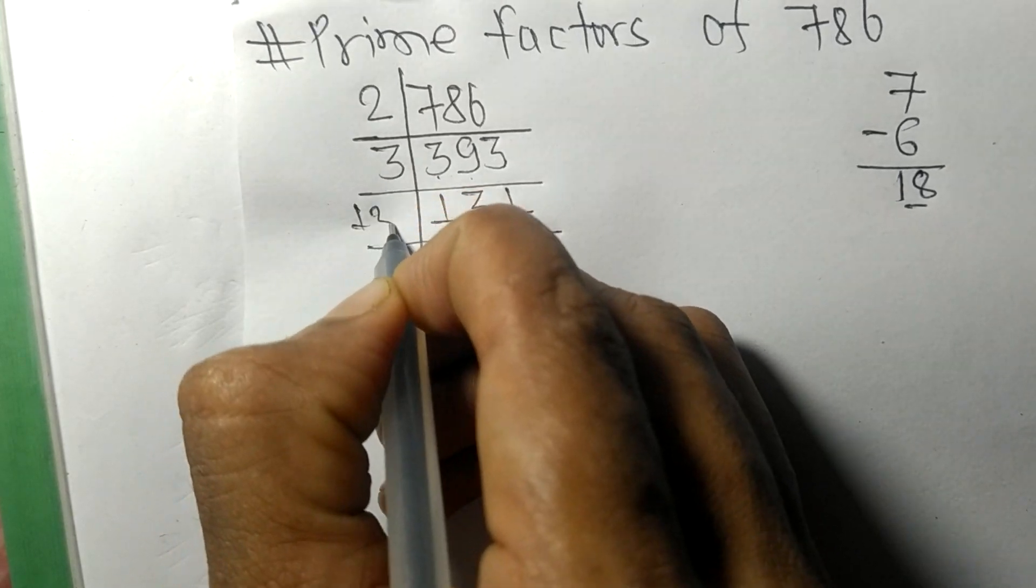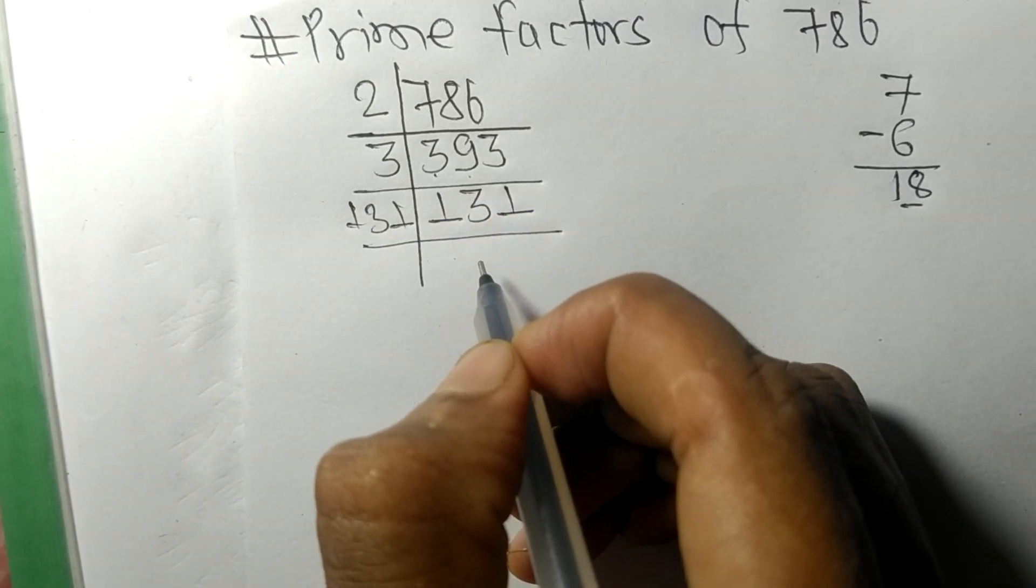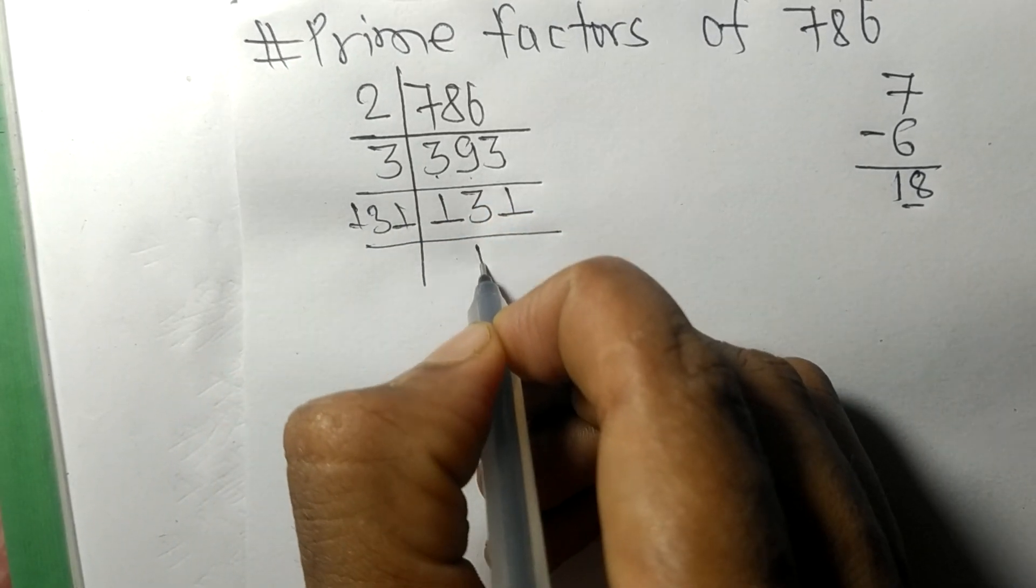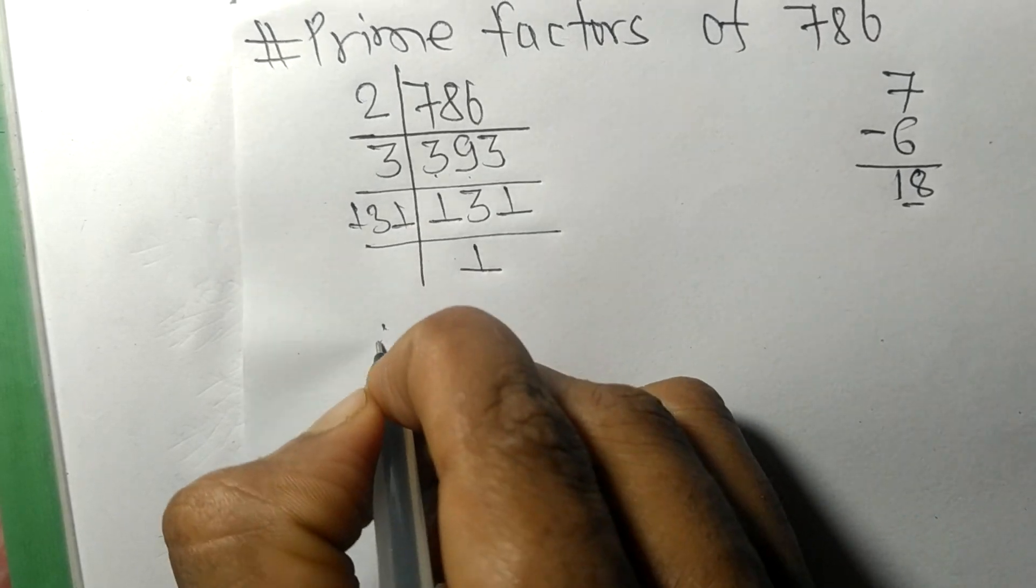by 131 only. On dividing we get 1. Therefore,